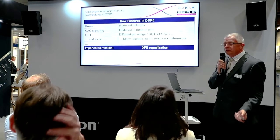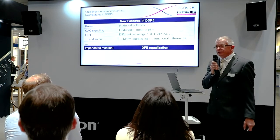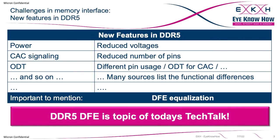Looking at DDR5, there are a lot of new features introduced: we have reduced power by reduced voltages, we have different command address signaling, we have also different use of ODT — the on-die termination. All of this stuff is quite new, and you can find it explained on the Micron website, but the most important new feature for DDR5 is the DFE equalizer, at least in my personal opinion.